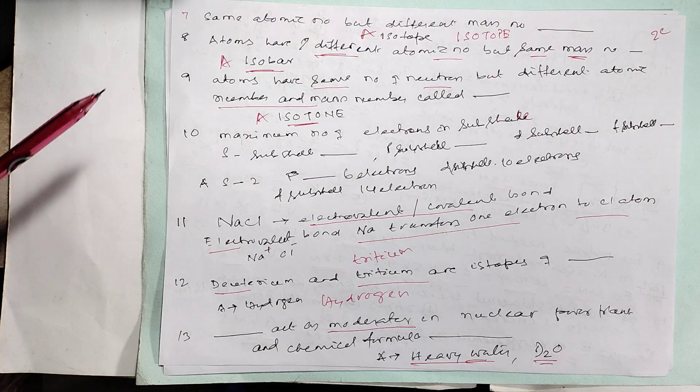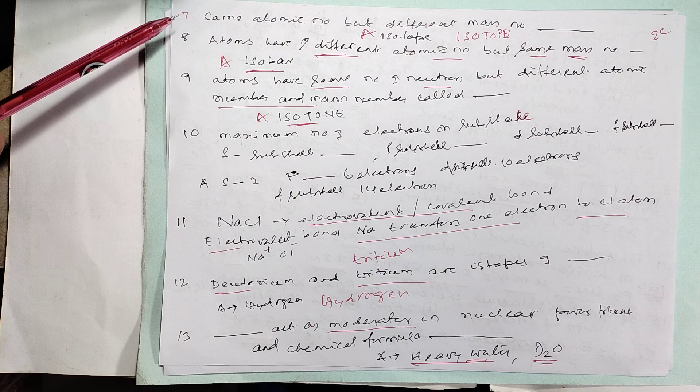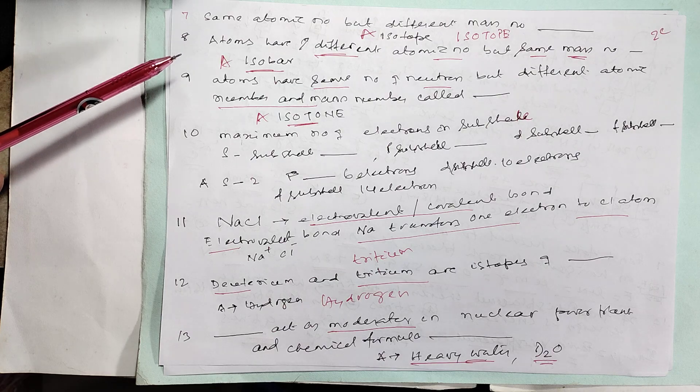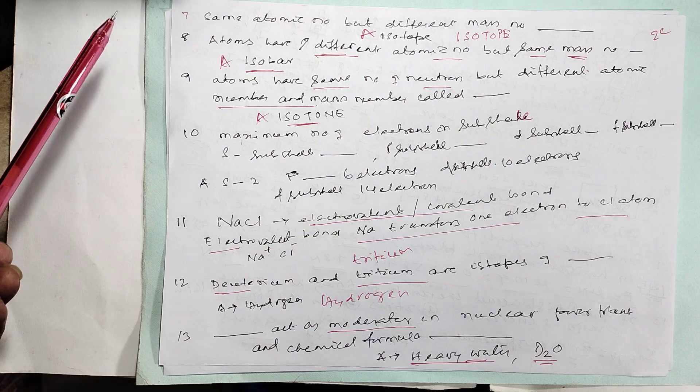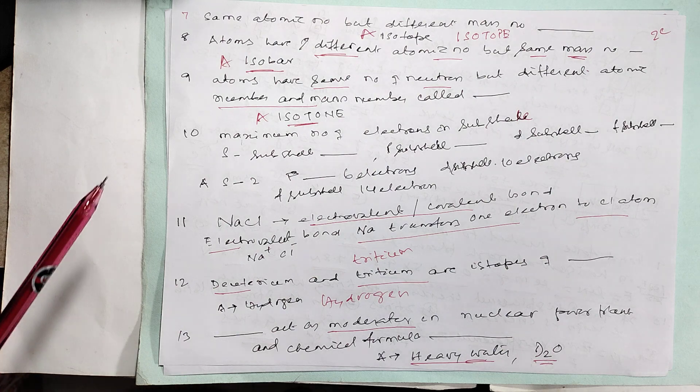Same atomic number but different mass number: isotopes. Different atomic number but same mass number: isobars. Same neutron number but different atomic number: isotones. These definitions are self-explanatory.